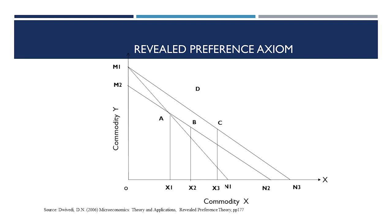Let us redraw budget line M2N2, which passes through the point that represents basket A. It can be inferred that basket A is still available to the consumer. The bundle that the consumer selects on this M2N2 budget line might be interpreted as his response to the change in the price of X.